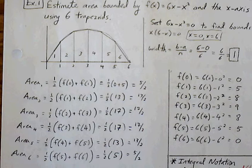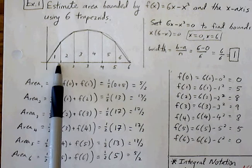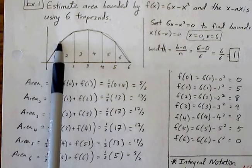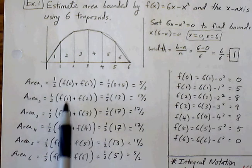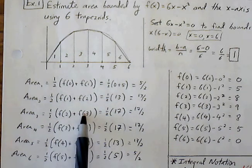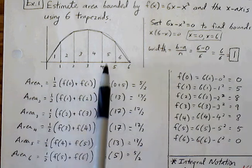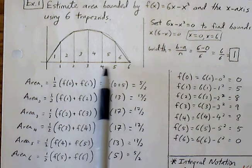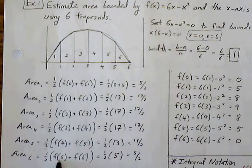And the area for my second trapezoid is width over 2, or base over 2 times f of 1 plus f of 2. These represent the height of my second trapezoid. The third trapezoid, f of 2 plus f of 3. Fourth trapezoid, f of 3 plus f of 4. Fifth trapezoid, f of 4, f of 5, and finally f of 5 and f of 6.